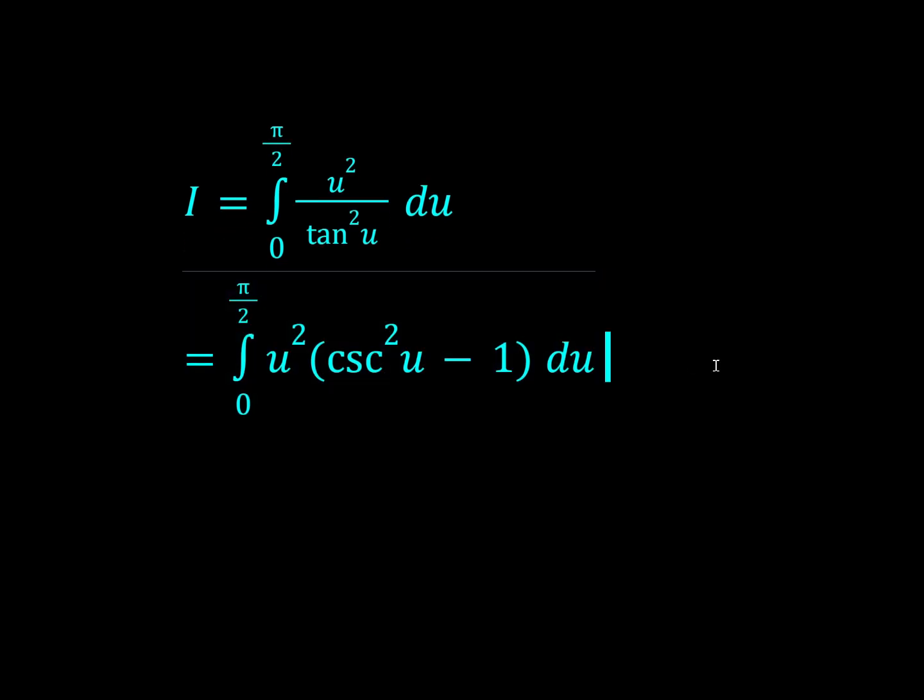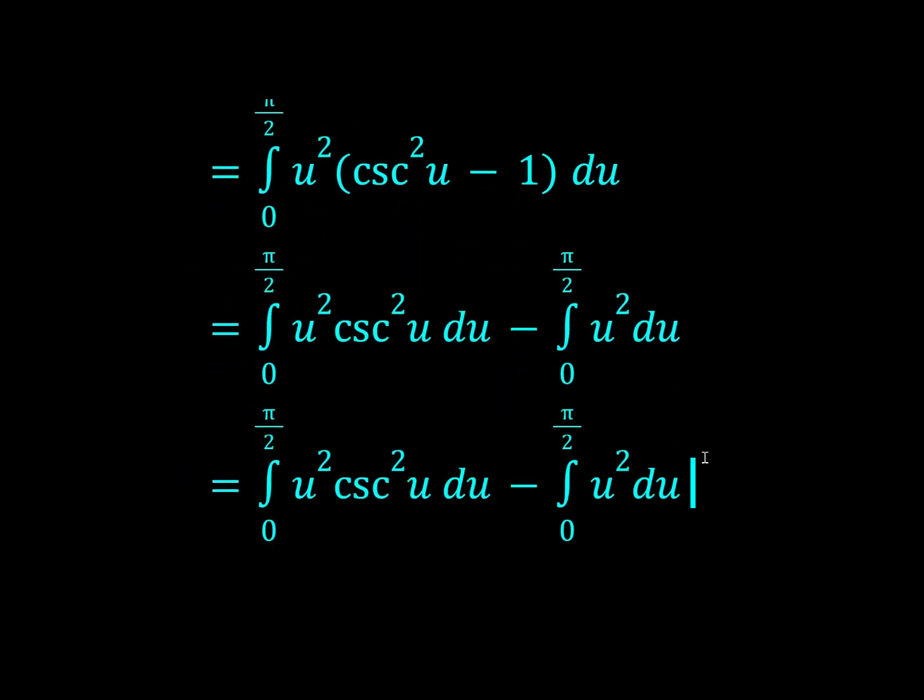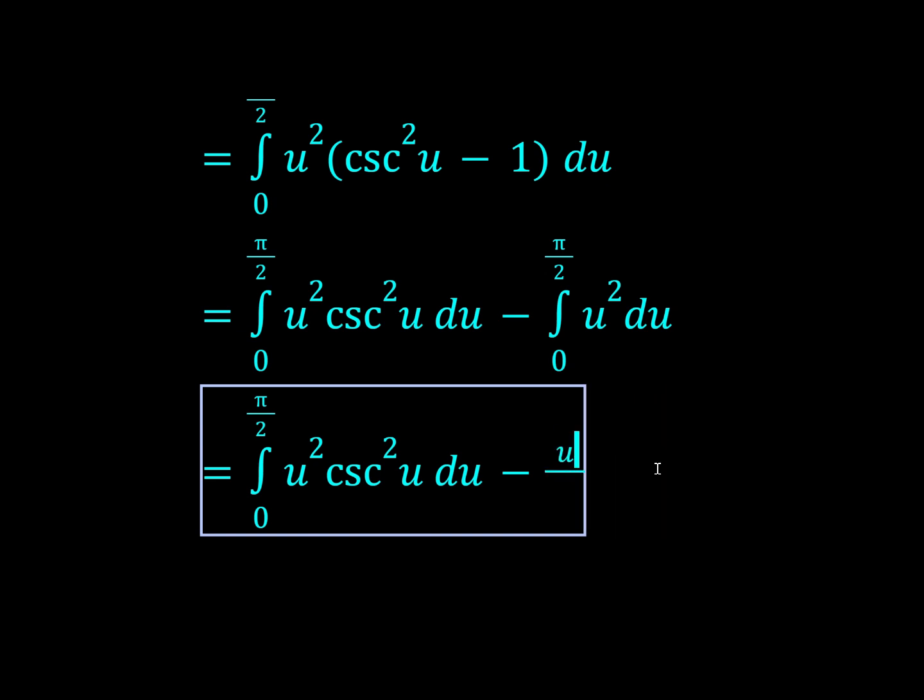Okay, so we can split up the integral like this, and now we know how to integrate u squared, that would just be u cubed over 3, and we're subbing in pi over 2. That would just give pi over 2 cubed over 3, pi cubed over 24.